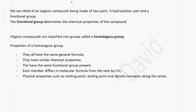An organic compound is made up of two parts: it consists of a hydrocarbon part and a functional group. The functional group is what determines the chemical properties of the compound.